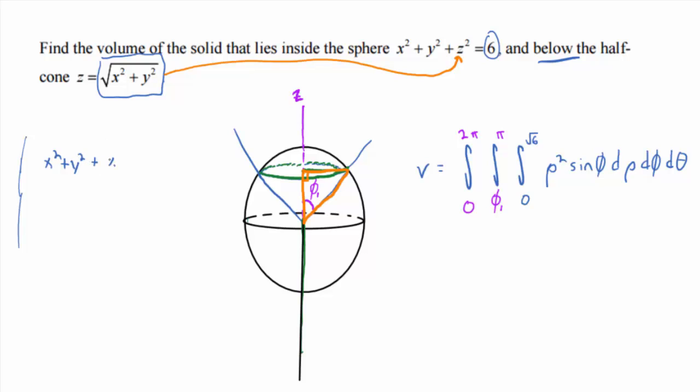Or 2x squared plus 2y squared equals 6. Or x squared plus y squared equals 3. Does everybody buy that? So what's the radius of this intersection circle in green here? Wouldn't it be the square root of that number? So I'm going to redraw that triangle in orange there, separately, so you can see it. So here's phi 1, and I know that the length of the opposite side of phi 1 is root 3. Do you buy that?